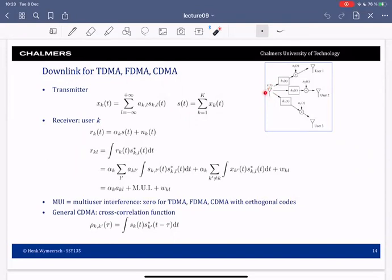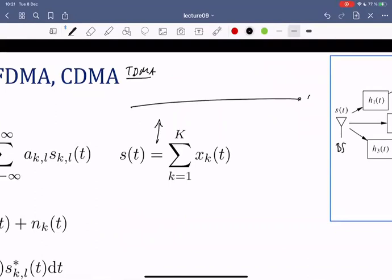The transmitted signal by the base station in downlink, here we can have the picture, the base station is on the left sending one signal to all of the users and this is the superposition of the signals for the individual users. For instance for TDMA, what this looks like is as follows: you have time. Let's say you have three users, then for user 1 you will send a signal for some time, user 2 and user 3. For user 1 you will send a sequence of pulses with data. After that time you will switch to the signal for user 2 and then finally you will send a signal for user 3.